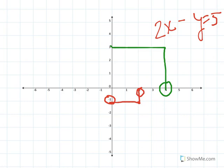What if x is 3? If x is 3, then 2 times x is 6. And y is going to be equal to 1.